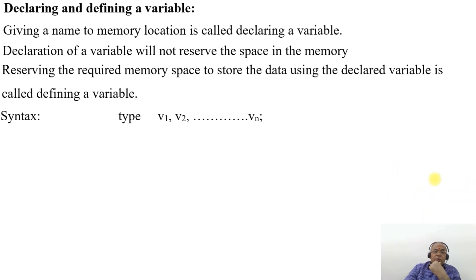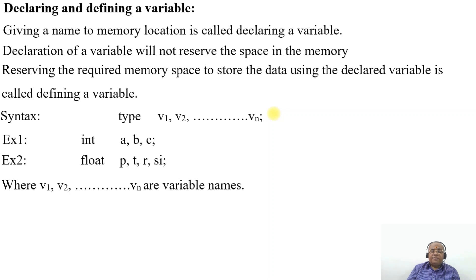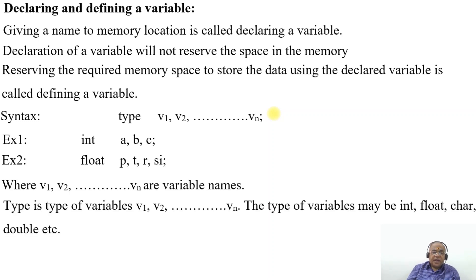The syntax is: type v1 to vn followed by a semicolon. For example, if you are considering abc as an integer, you are declaring the variable abc as an integer variable. The variables ptr, p, t, r, si are float variables. Where v1 to vn will be variable names and the type of variables may be int, float, char, double, etc.